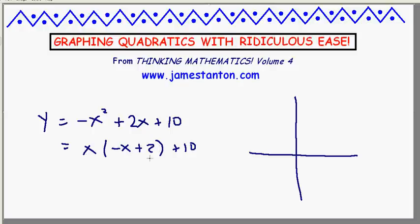Upward-facing or downward-facing? Well, I'll put in a million. A million times basically negative a million, a little bit off, plus 10. That's going to be a huge negative number. So basically, it's going to be a downward-facing curve.